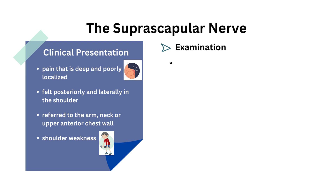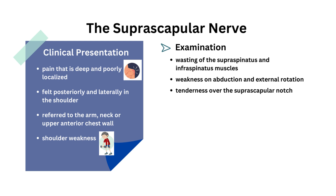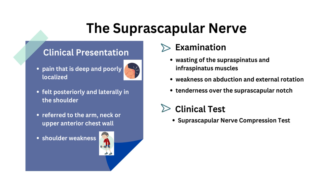There may be wasting of supraspinatus and infraspinatus muscles, accompanied by weakness during abduction and external rotation. Tenderness over the suprascapular notch is also present. Clinical tests include the suprascapular nerve compression test; a positive test is indicated by reproduction of pain or weakness in the shoulder.